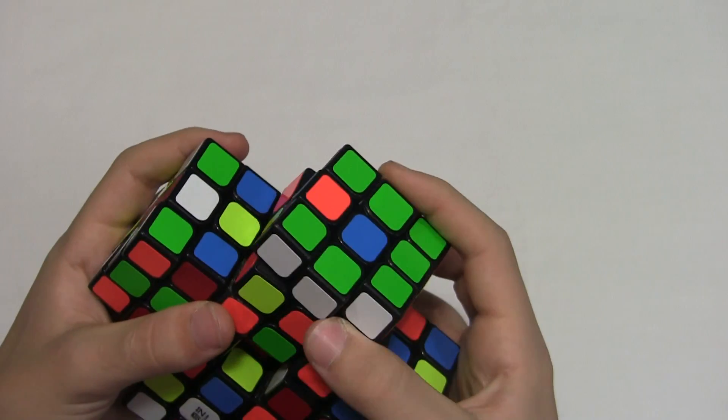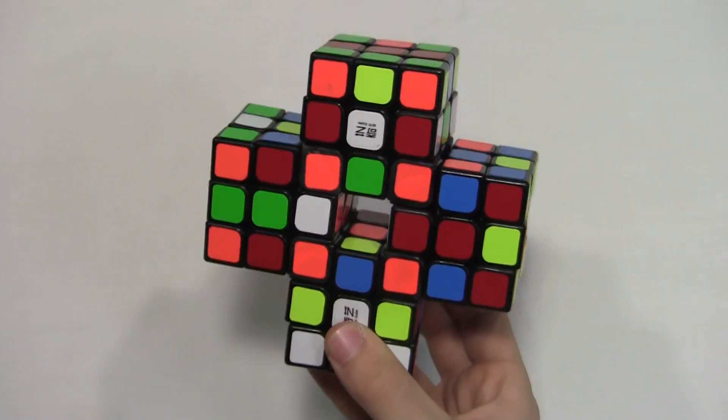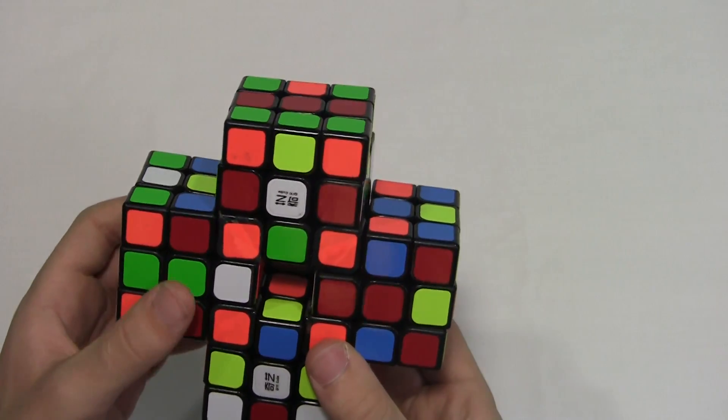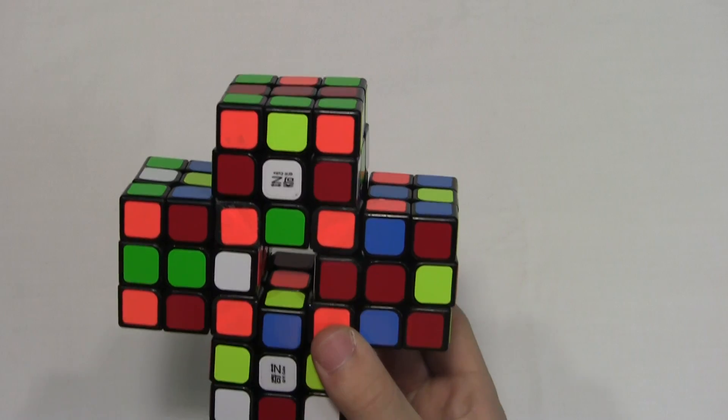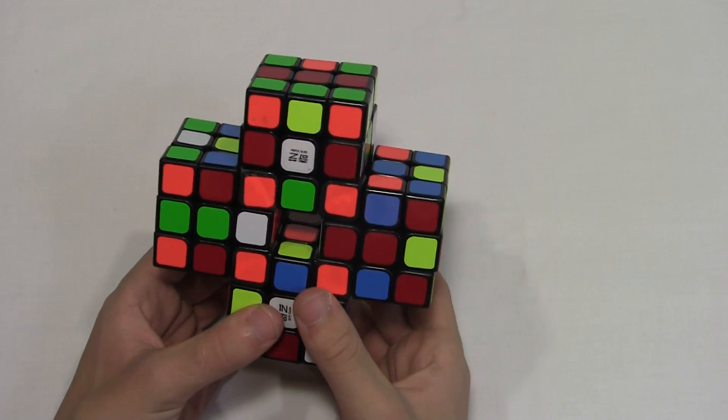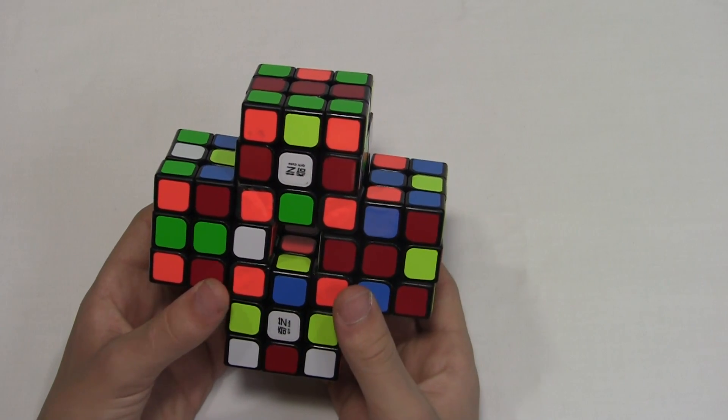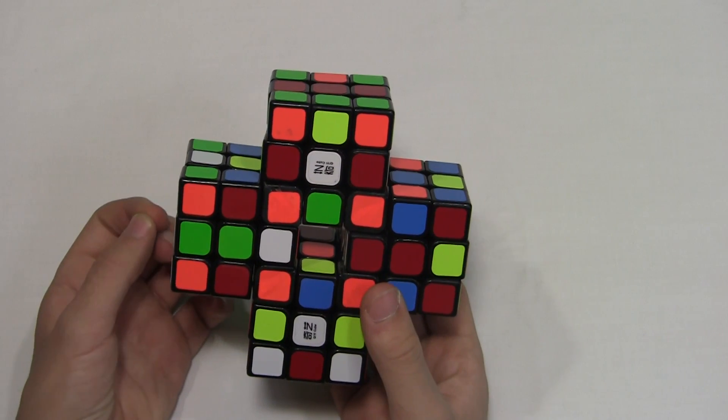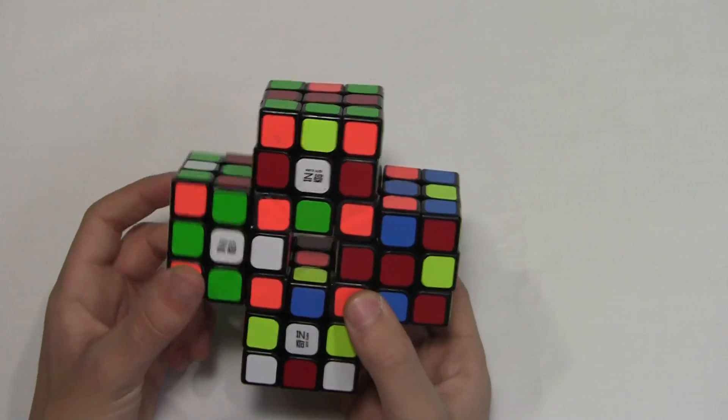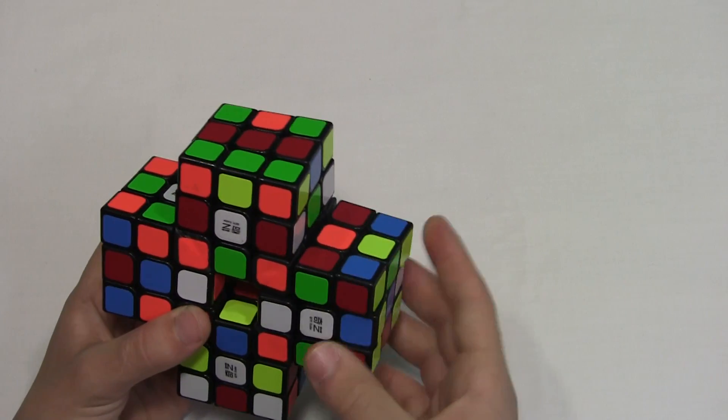And I like the sails because I modded with the YJ Guanlongs before, and I made a Siamese cube out of them. And it seems to be not as high quality with the YJ Guanlongs, and just overall not as nice as the chi sails. I like the chi sails better for modding.